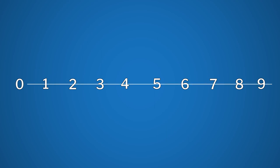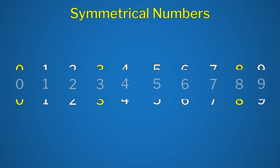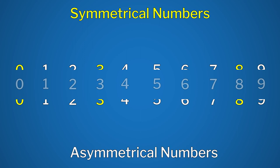Let us start with differentiating between symmetrical and asymmetrical figures. Here I have digits 0 to 9. I will try to divide these numbers into two equal parts. I can see that the numbers 3, 0, and 8 can be divided into two equal parts, while the rest of the numbers cannot. The numbers which can be divided into two equal parts are symmetrical numbers, while the rest of them are asymmetrical.